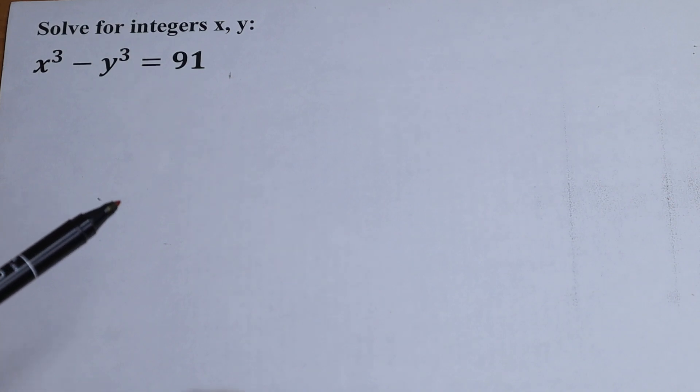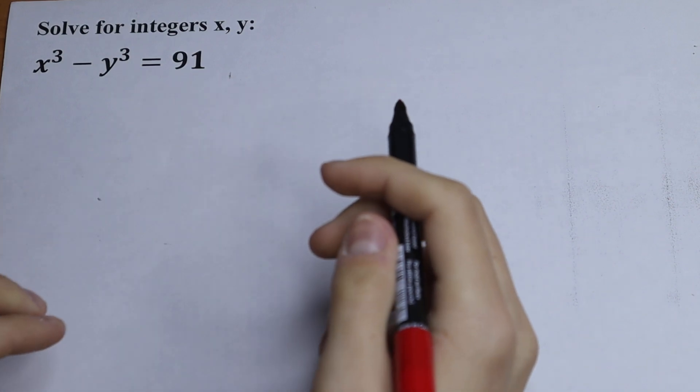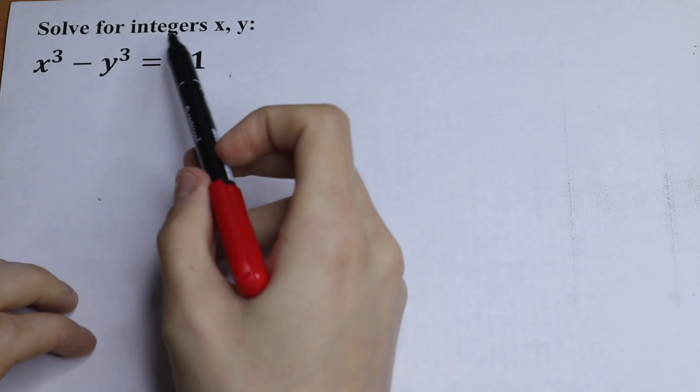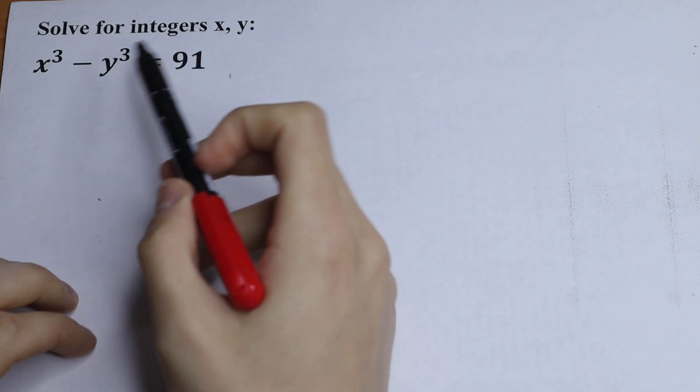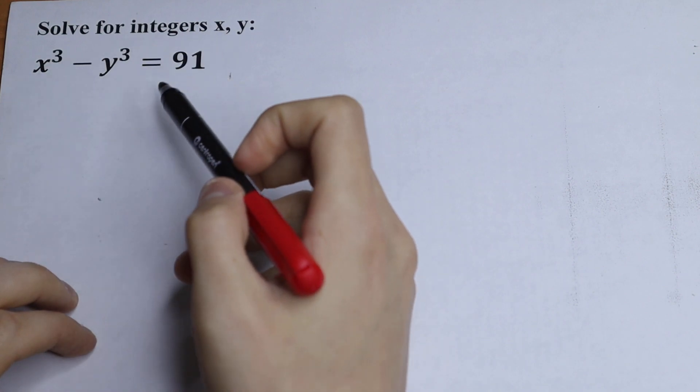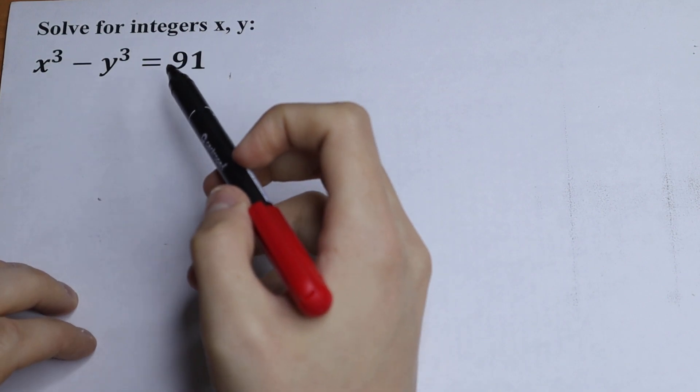Hello everyone, welcome back to MathMode. Here we have an interesting question. We need to find x and y. x³ minus y³ equals 91.